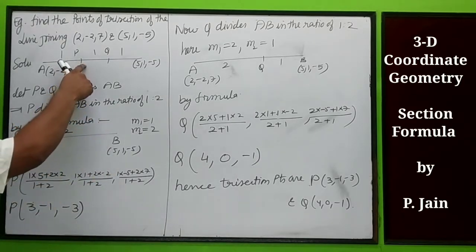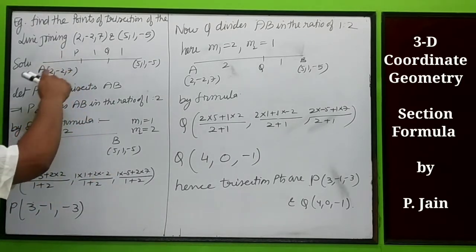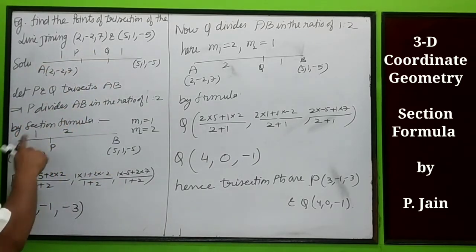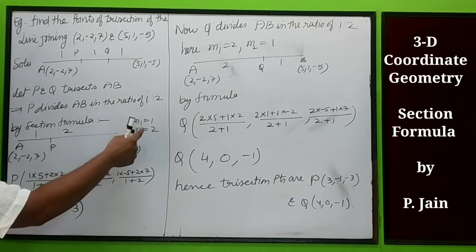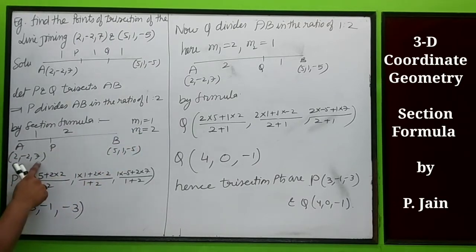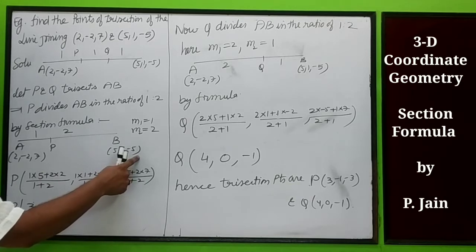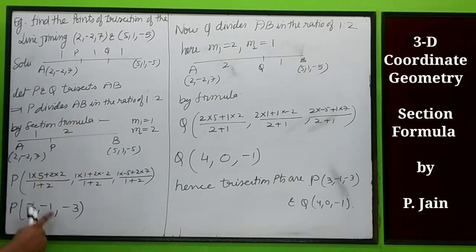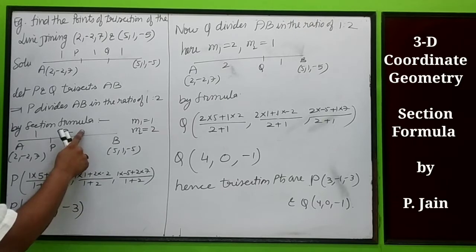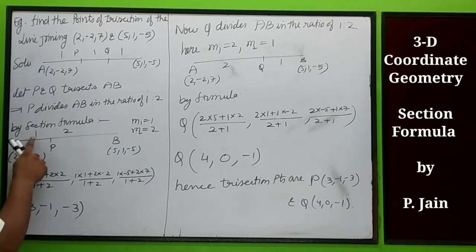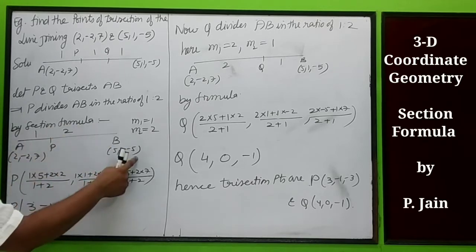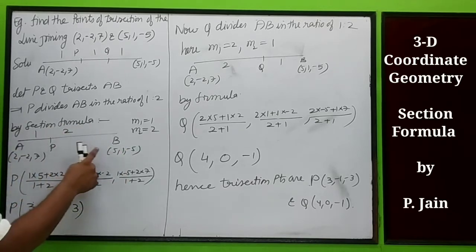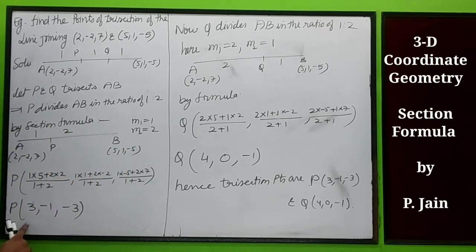So M1 is 1, M2 is 2, and (x1,y1,z1) = (2,-2,7), (x2,y2,z2) = (5,1,-5). By the section formula: x = (1×5 + 2×2)/(1+2) = 3, y = (1×1 + 2×(-2))/(1+2) = -1, z = (1×(-5) + 2×7)/(1+2) = 3. So coordinates of P are (3, -1, 3).